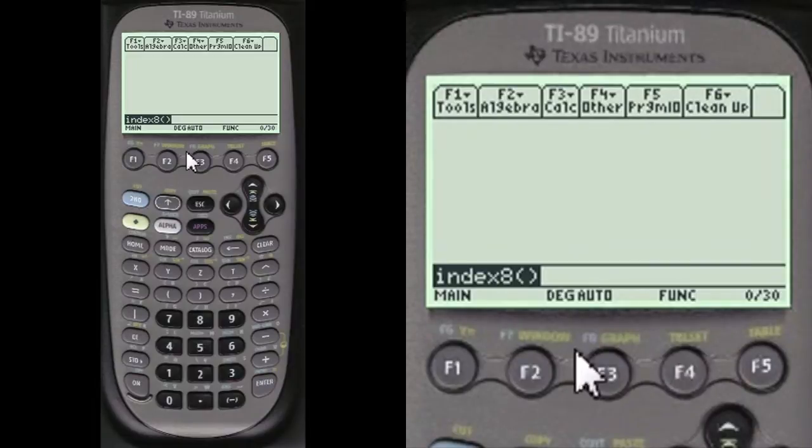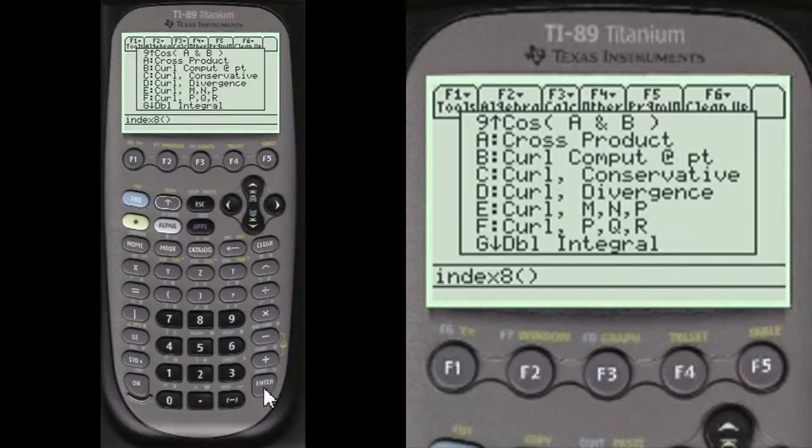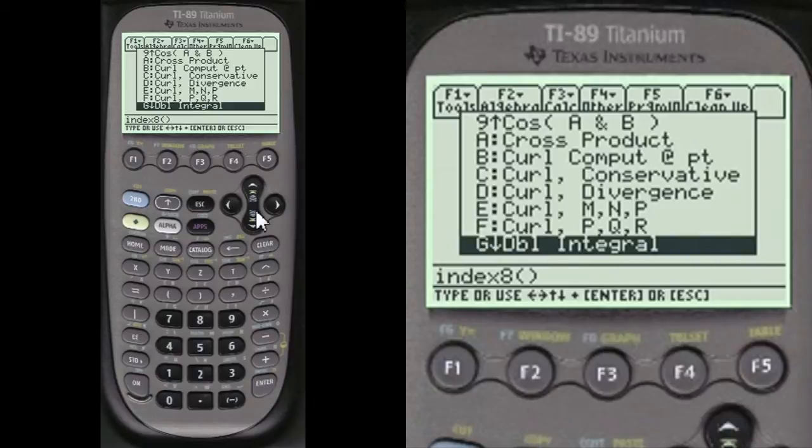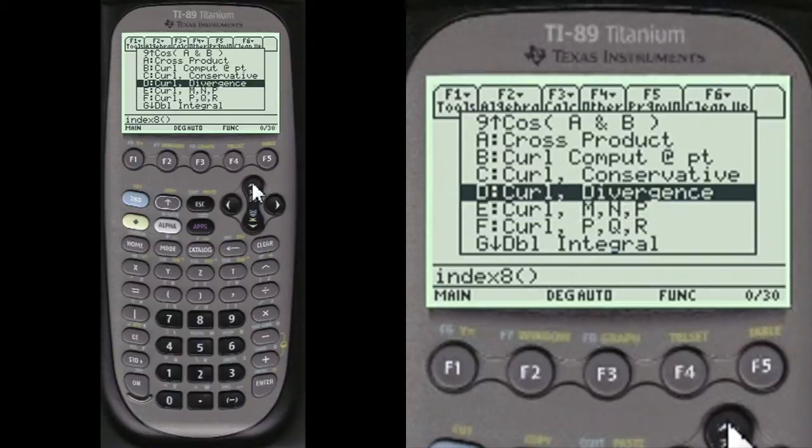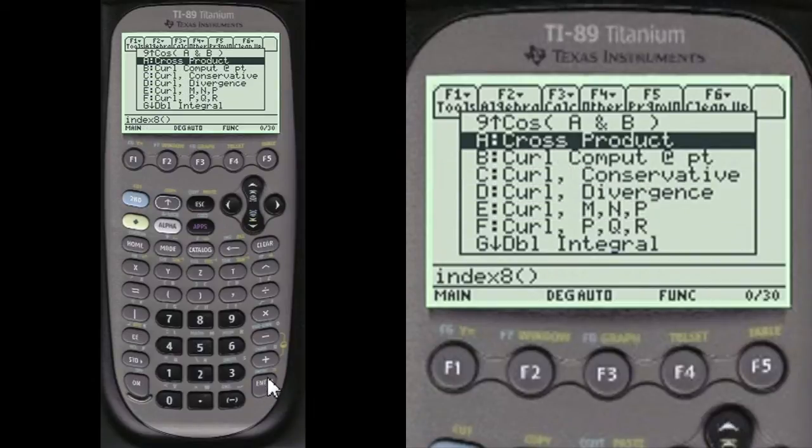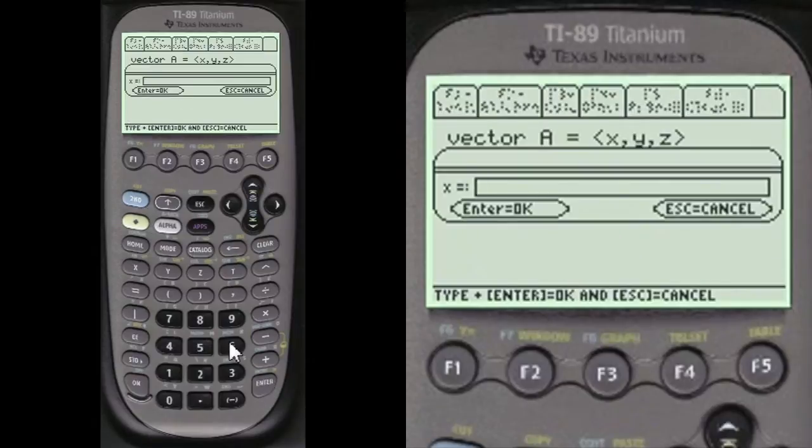Let's do an index 8 to get to my menu. I'm going to scroll to cross product. Add the vectors. Alpha 8. You have to add alpha before you enter anything into my menus.